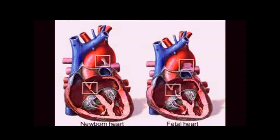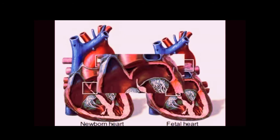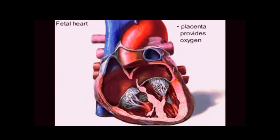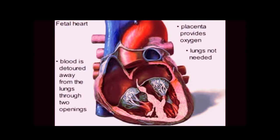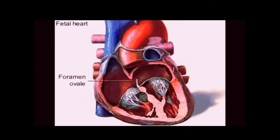You can see the fetal heart has the same basic components as the newborn heart, but there are a couple of important differences. Because the placenta is providing all of the oxygen the fetus requires, its lungs are not needed to perform this task, and therefore much of the fetus's blood is detoured away from the lungs through two openings or connections: the foramen ovale, which connects the right and left atria, and the ductus arteriosus, which connects the aorta and the pulmonary artery.